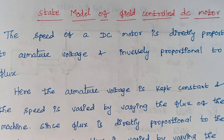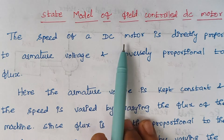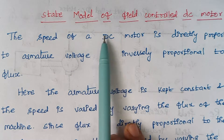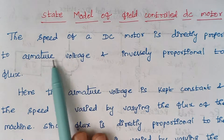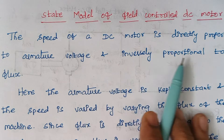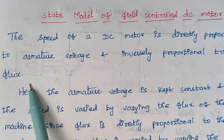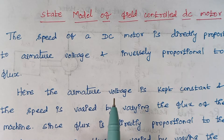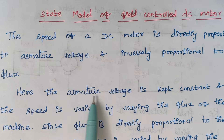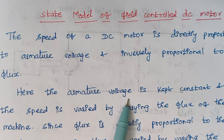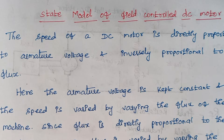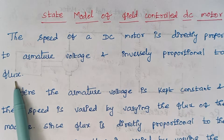The DC motors are classified into two types: one is armature controlled and another one is field controlled. The speed of a DC motor is directly proportional to the armature voltage and inversely proportional to the flux.